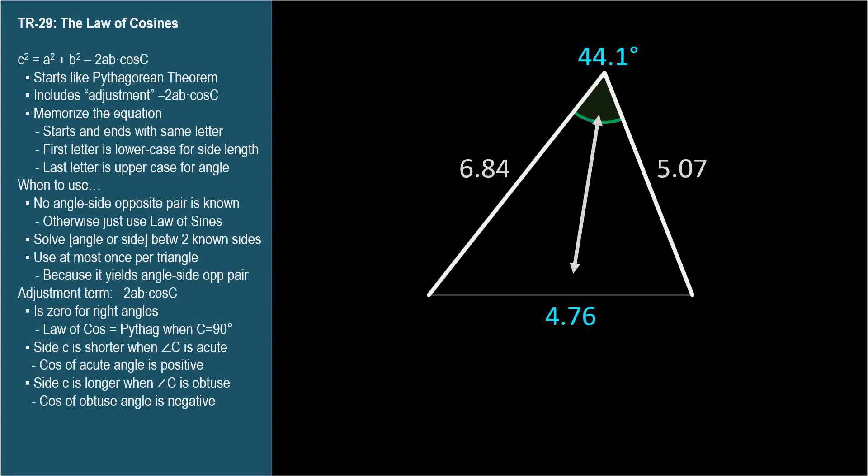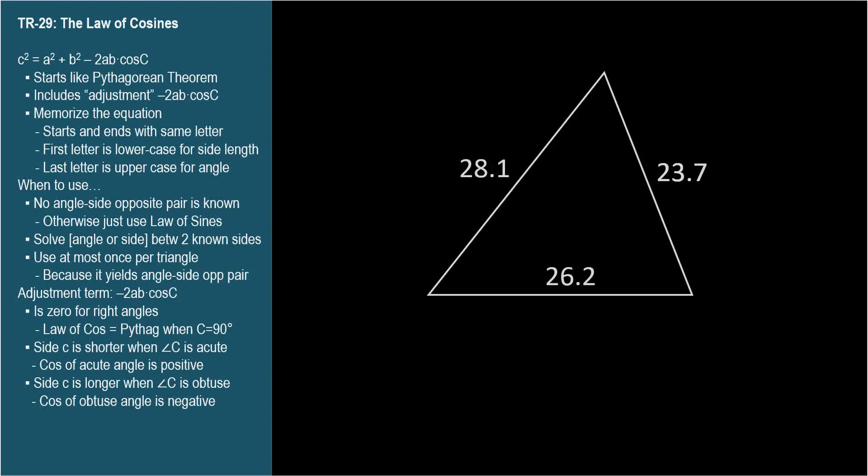Here's a triangle where we know the three sides, but no angles. We can't use the Law of Sines since we have no angle side opposite pairs. So we'll use the Law of Cosines and pick an angle to solve, this one that I'll label theta. The Law of Cosines starts with the side opposite theta and ends with the cosine of theta. And we're always solving for one or the other.